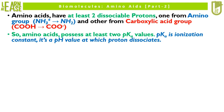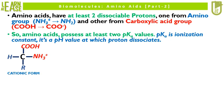So, amino acids possess at least two pKa values. pKa is the ionization constant — it is the pH value at which a proton dissociates. The image shows the amino acid in the cationic state, which exists when the pH of the solution containing the amino acid is highly acidic.